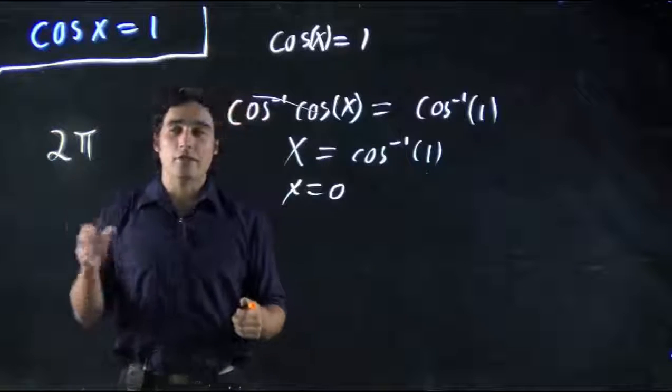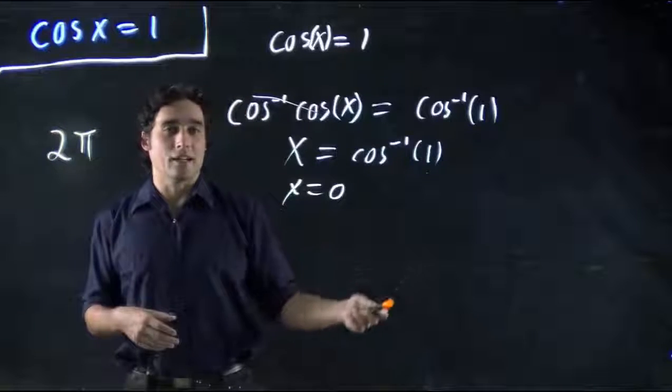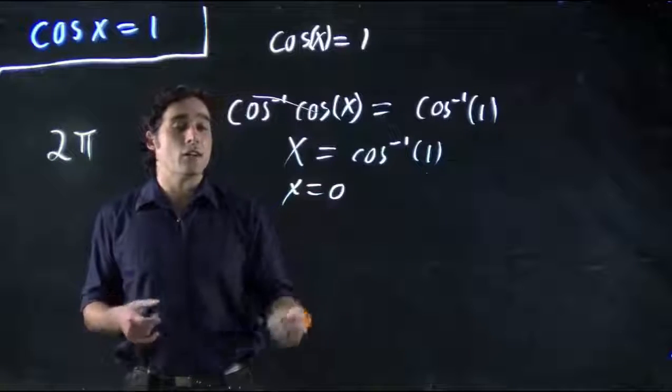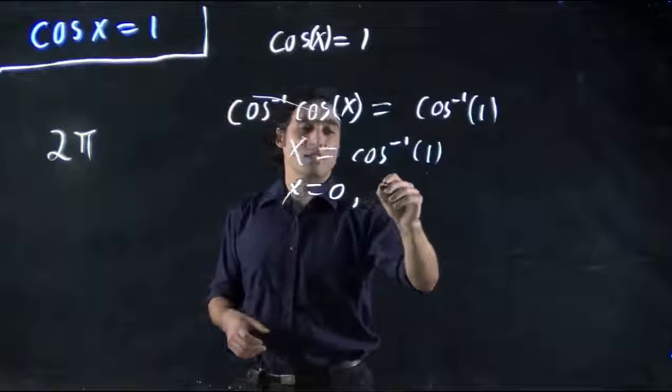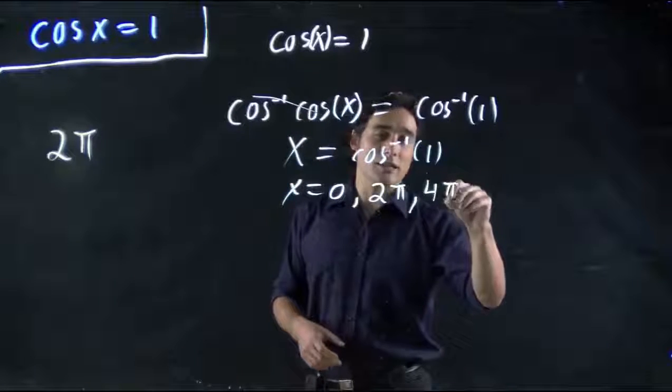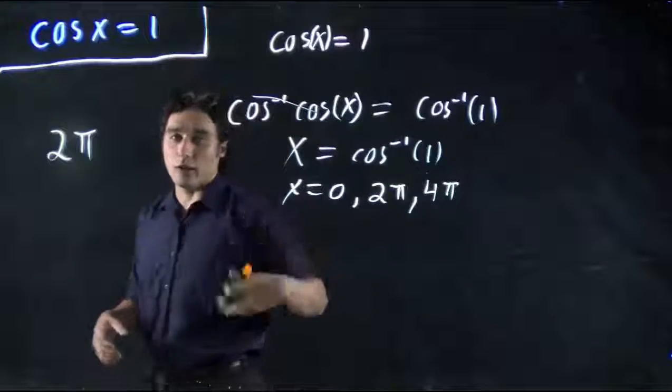So, every 2 pi, we're going to repeat itself. So, we add 2 pi to whatever the answer is we got. In this case, we got a convenient 0, but every 2 pi, it's going to repeat itself. So, at 2 pi, it's going to repeat itself. At 4 pi, it's going to repeat itself. At 6, at 8, at 10, at 12, et cetera. For on, forever.